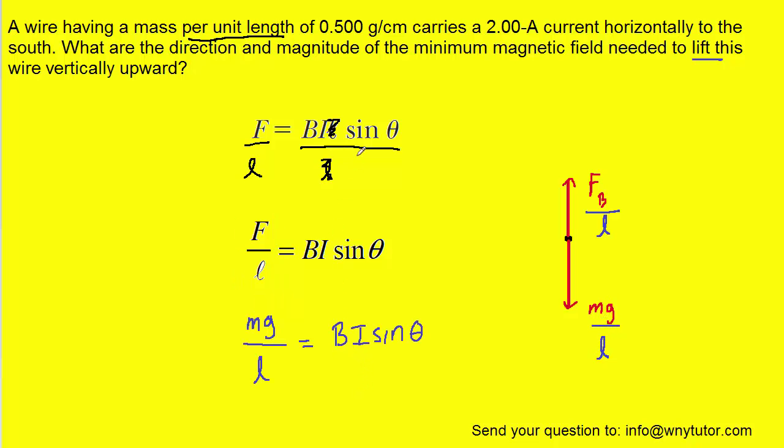Since the question is asking us to find the direction and magnitude of the magnetic field, we're going to solve this equation for B, which represents the magnetic field. To do that, we'll divide both sides of this equation by the term I sine theta. On the left-hand side, that term will end up in the denominator.